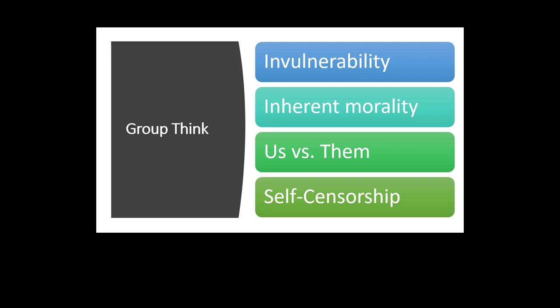Another thing to think about is the notion of groupthink. We are social beings who come together in communities connected through cultural values and norms, and when we're in a collective we have this sense of being invulnerable — together we're stronger than individually — and that can impact our perspective. Groupthink can also make us think that we are morally superior to another individual or group of people, creating an us-versus-them atmosphere. Even within those groups, we tend to censor ourselves to avoid being seen as one of those outsider-type characters.